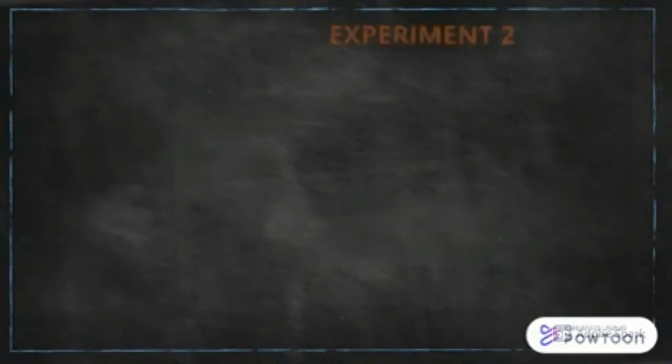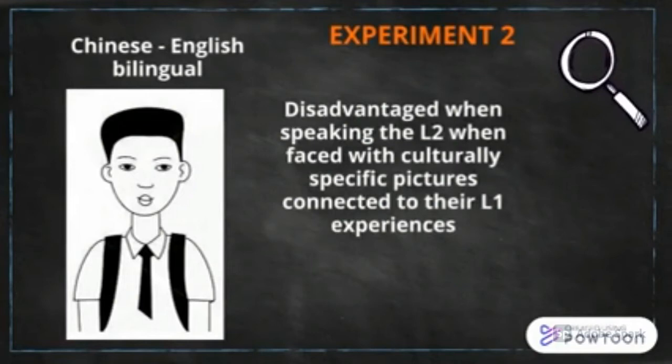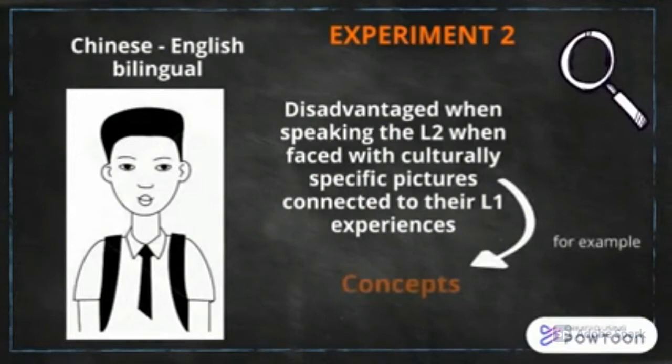In a second experiment done by Zan, it is shown that Chinese-English bilinguals are similarly disadvantaged when speaking the L2 when faced with culturally specific pictures connected to the L1 experiences. Unlike bilingual babies, bilingual adults may not always be sensitive to cues in the environment signaling that only one of the two languages is relevant. For instance, when reading sentences, they might activate the other language, even though the other language may not be relevant.